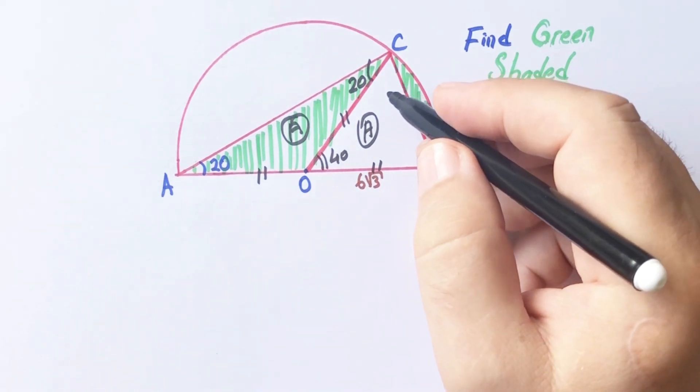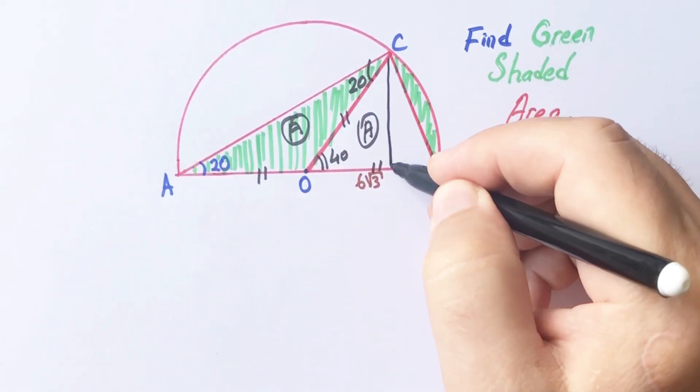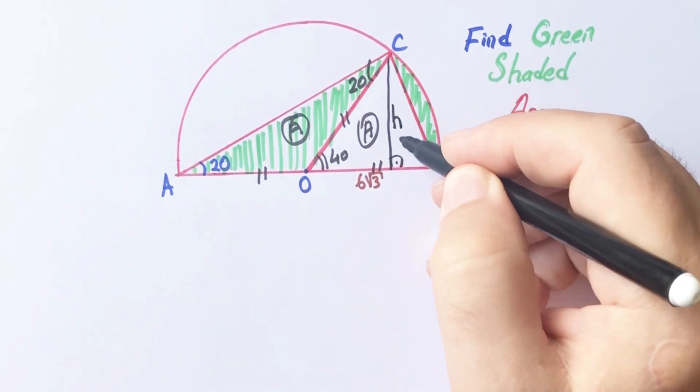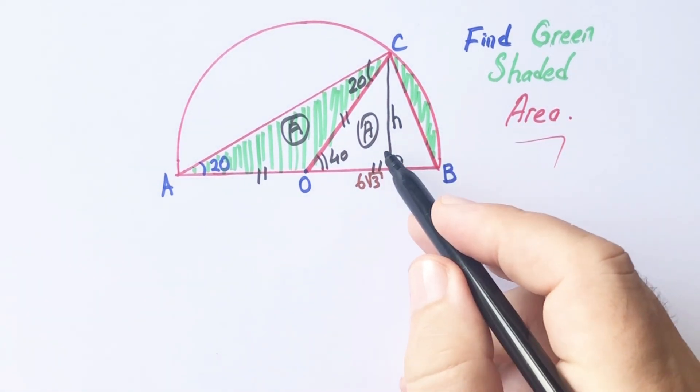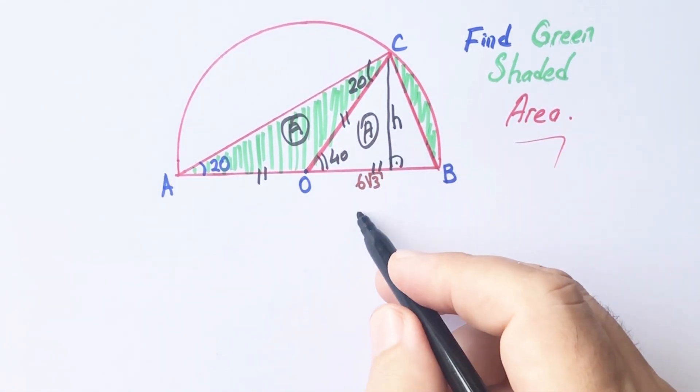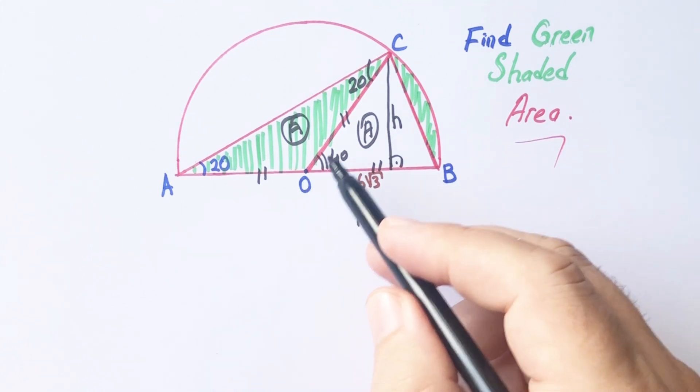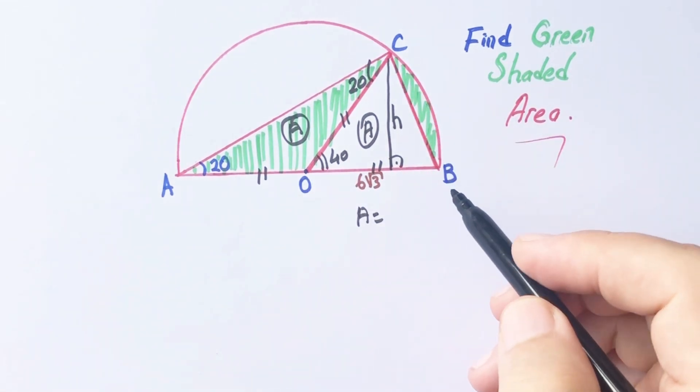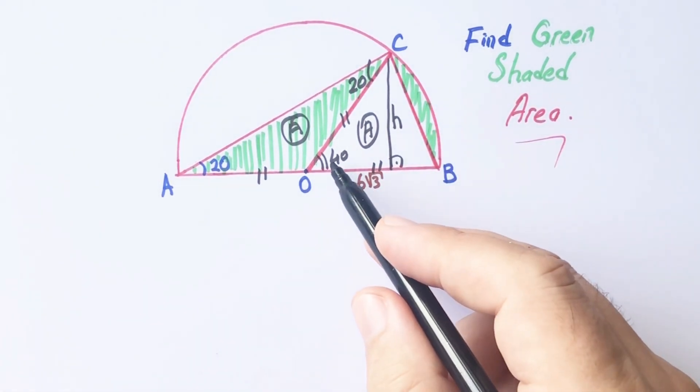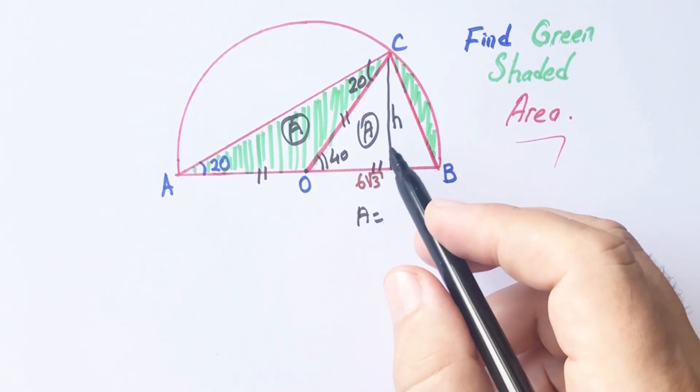Let me explain. Let's call this height H unit. The area of triangle OCB equals H times 6 root 3 over 2.